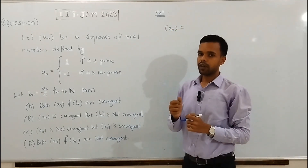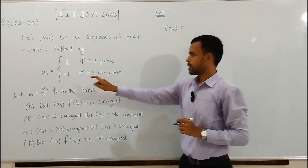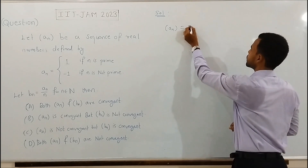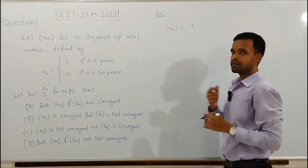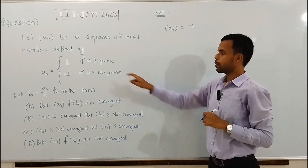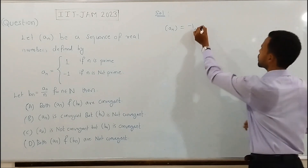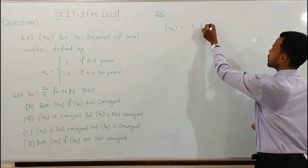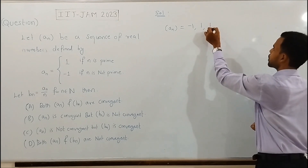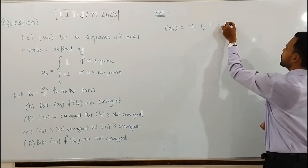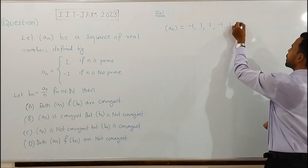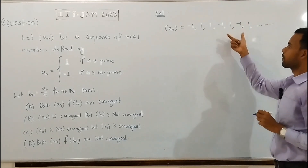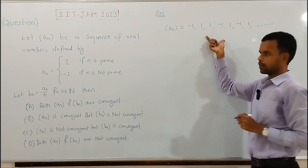Let's write a few terms of sequence an. When n = 1, n is not prime, so a1 = -1. When n = 2, n is prime, so a2 = 1. When n = 3, n is prime, so a3 = 1. The fourth term is -1, fifth term is 1, sixth term is -1, seventh term is 1, and so on.